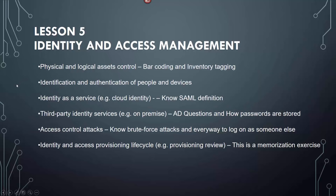Lesson 5 will cover identity and access management — physical and logical asset control, barcoding, inventory tagging, identity as a service. You'll need to know your SAML and all the identifications, OAuth 2, third-party identity services, AD questions, how passwords are stored, and hash stuff. Brute force attacks and identity and access provisioning life cycles — some of that's a memorization exercise.